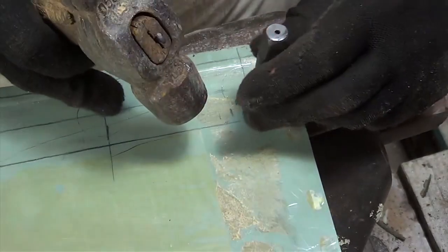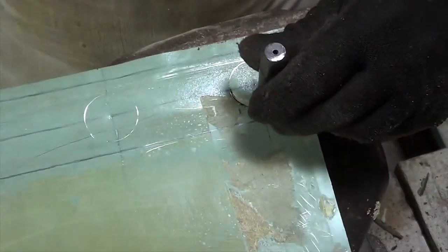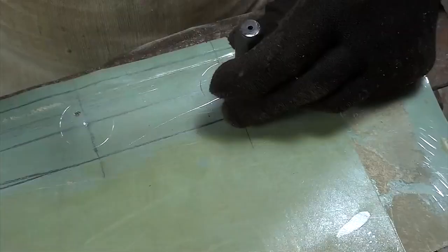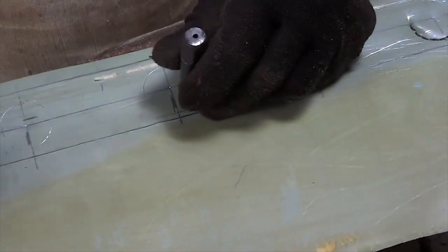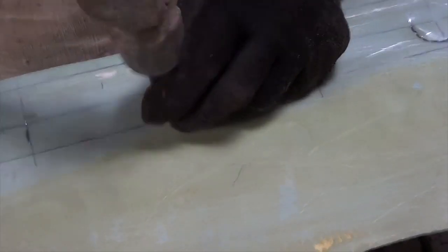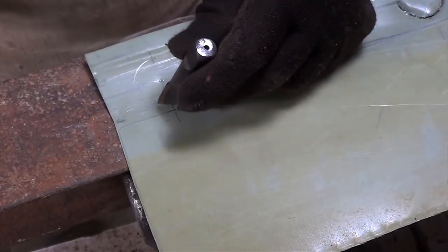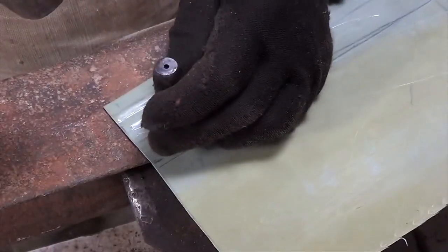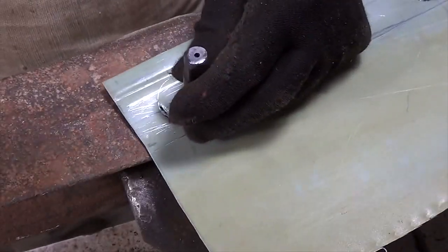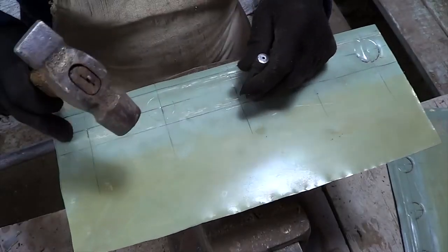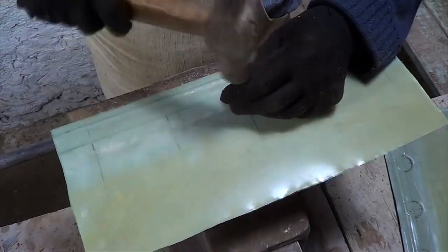Now we cut out half of the resultant circle. I do it with a hammer and chisel.